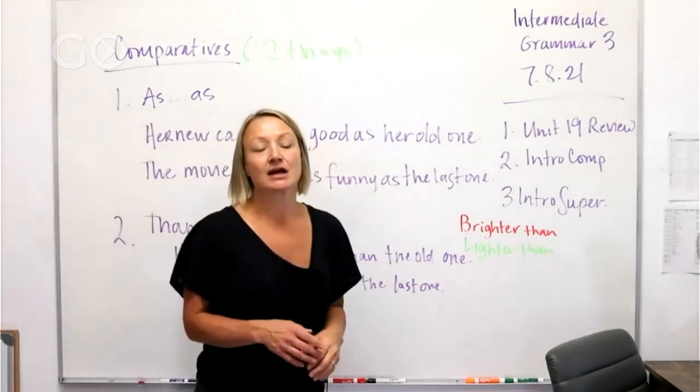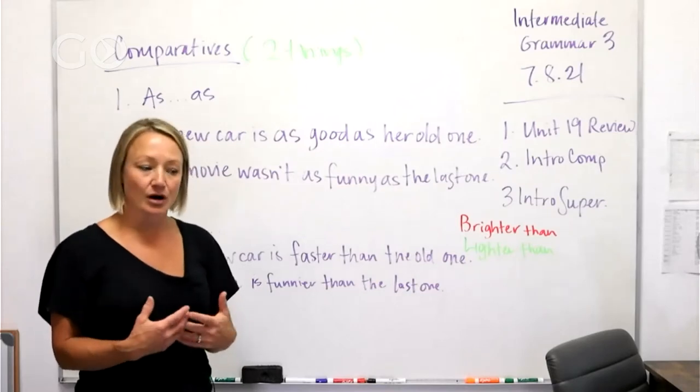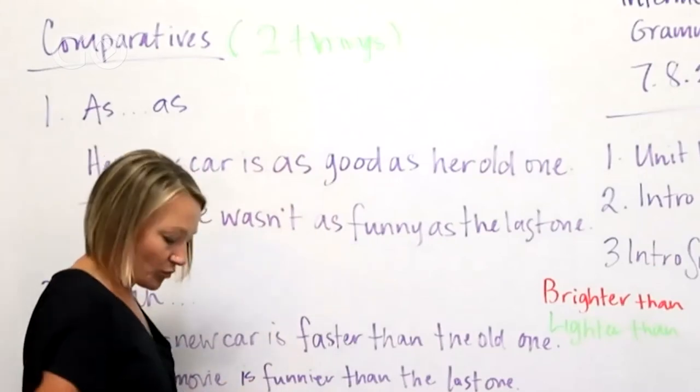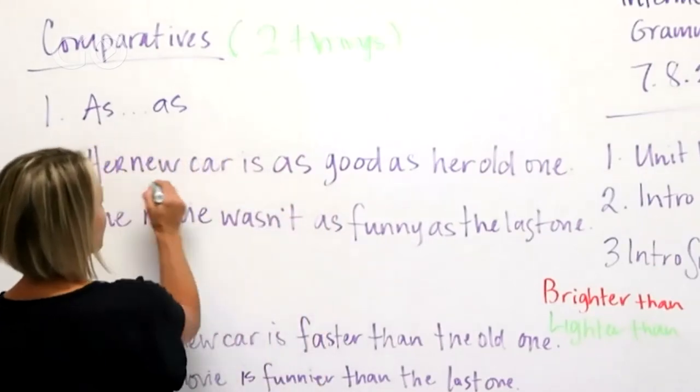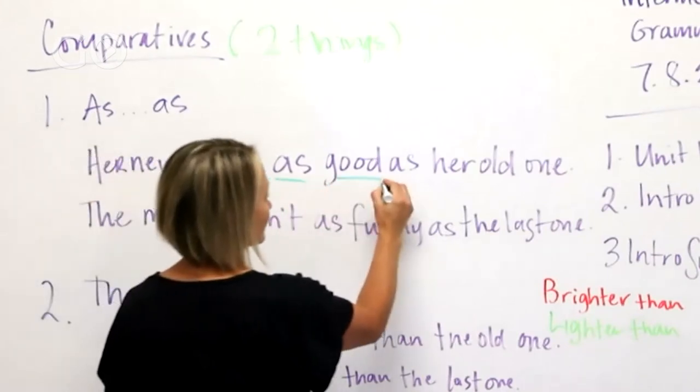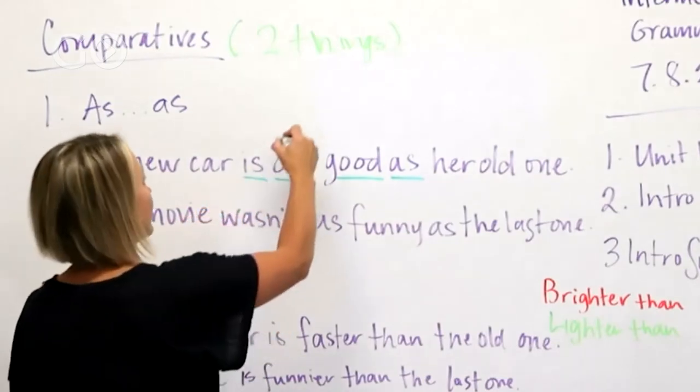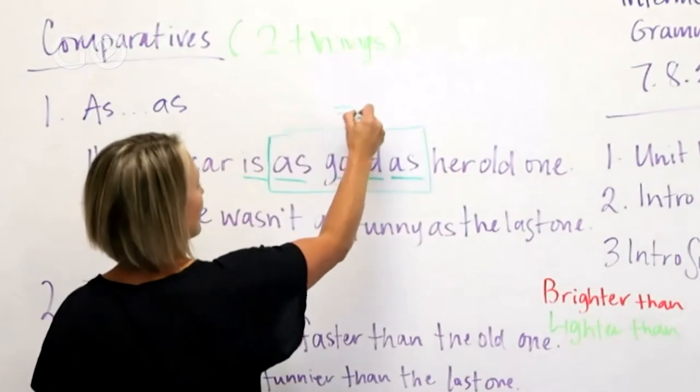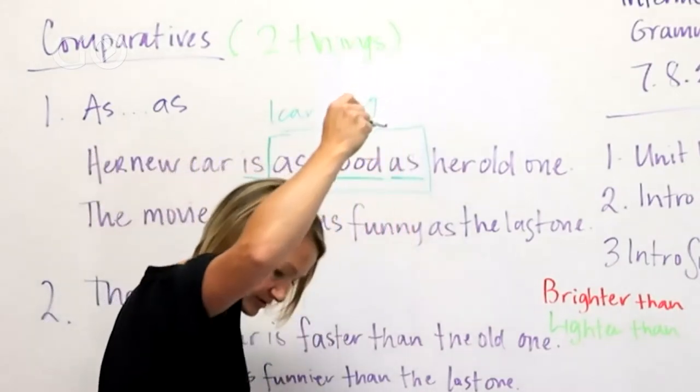Now I want to point something out. When we've got all of these small words like this, a lot of people's tendency or habits are to drop some of these words and I want you guys to make sure you do not do that. So we need to have the new car is as good as. So you need all of those. You need the verb and then this is the comparative structure where things are equal, one car is equal to the other car.